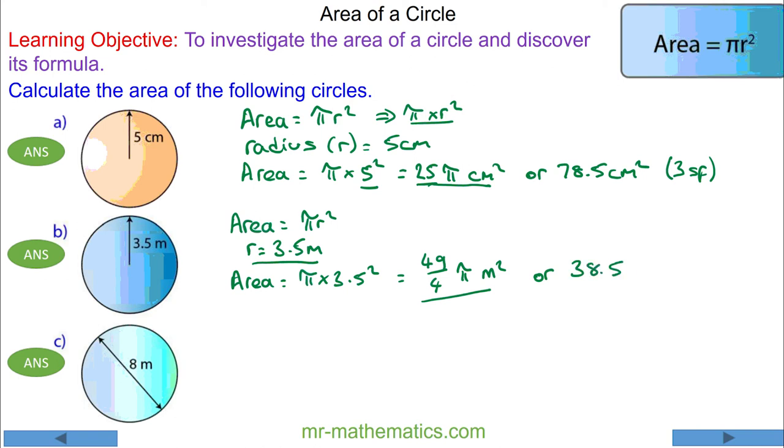Or 38.5 meters squared to three significant figures. Finally, for question c, we're going to use πr². We've been given the diameter which is 8 meters, however the radius is half of the diameter.